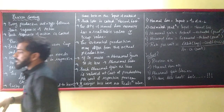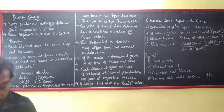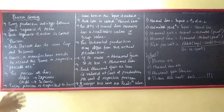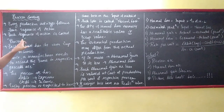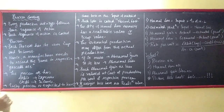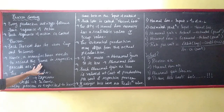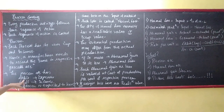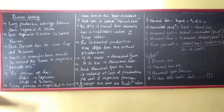So let us come to the points and understand exactly this topic. Every production activity follows some sequence of action. Each sequence of action is called a process. Each process has its own expenses and incomes. Hence, a manufacturer needs to record the expenses in the respective process account. The process account has debit on the left-hand side — where you record expenses — and credit on the right-hand side — where we record all the incomes.